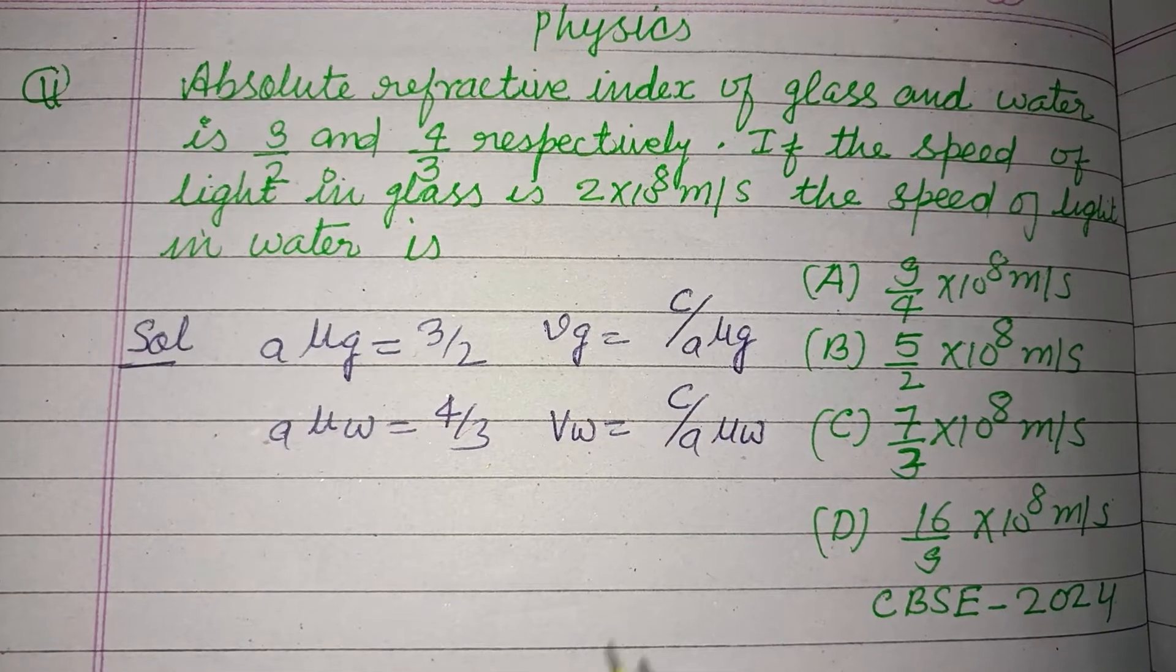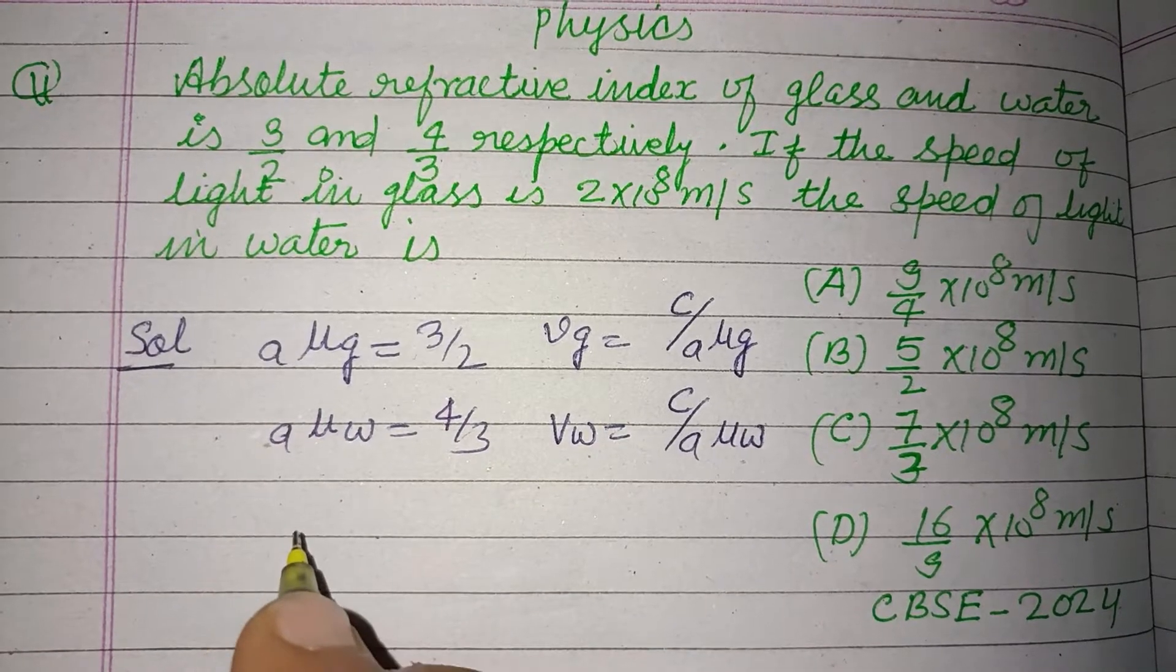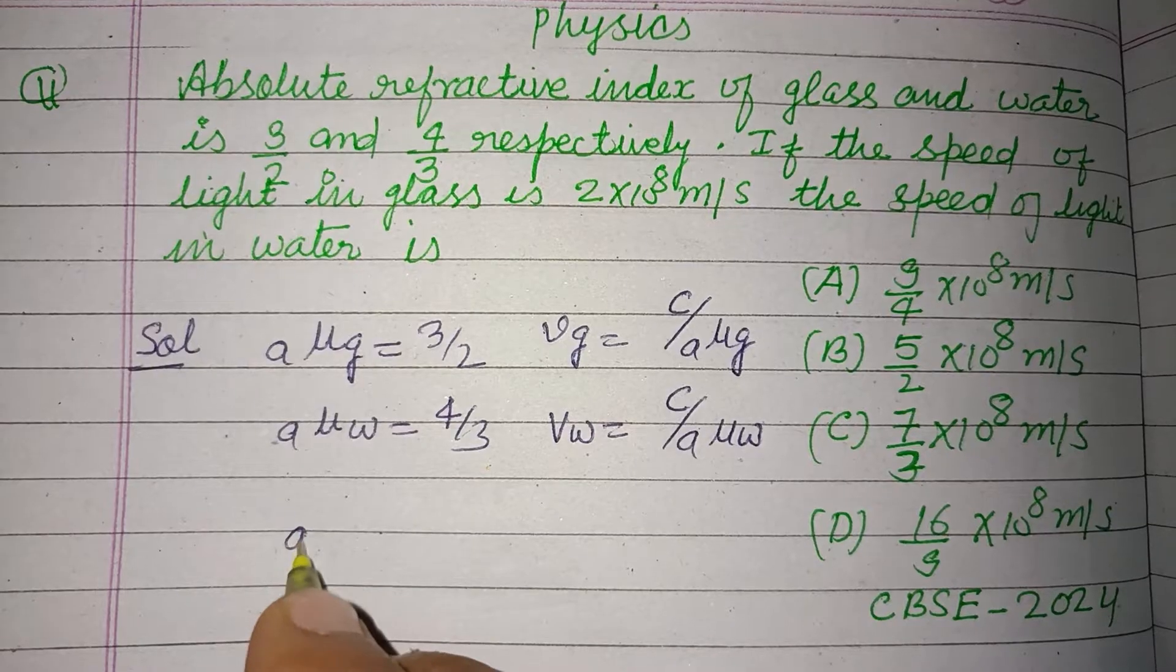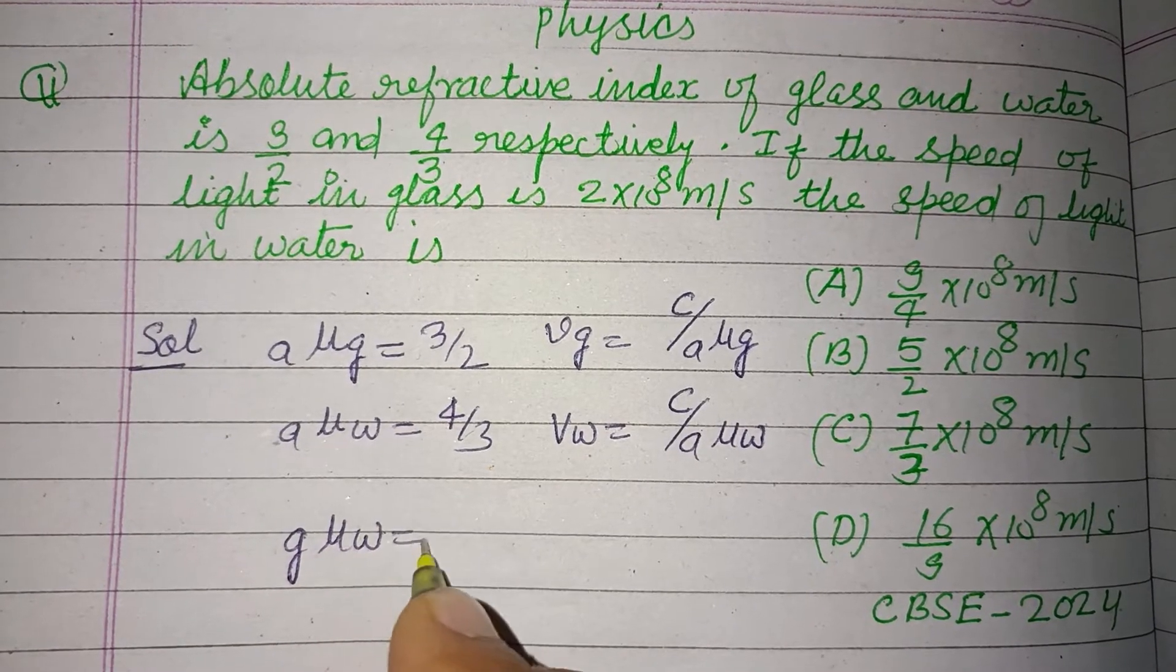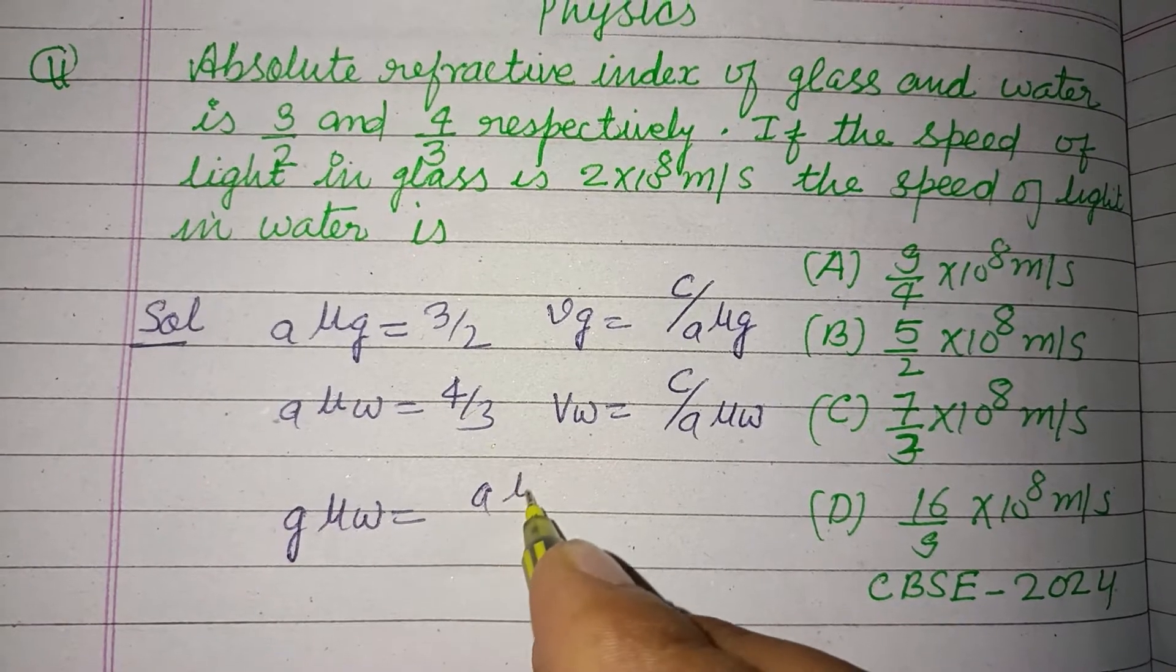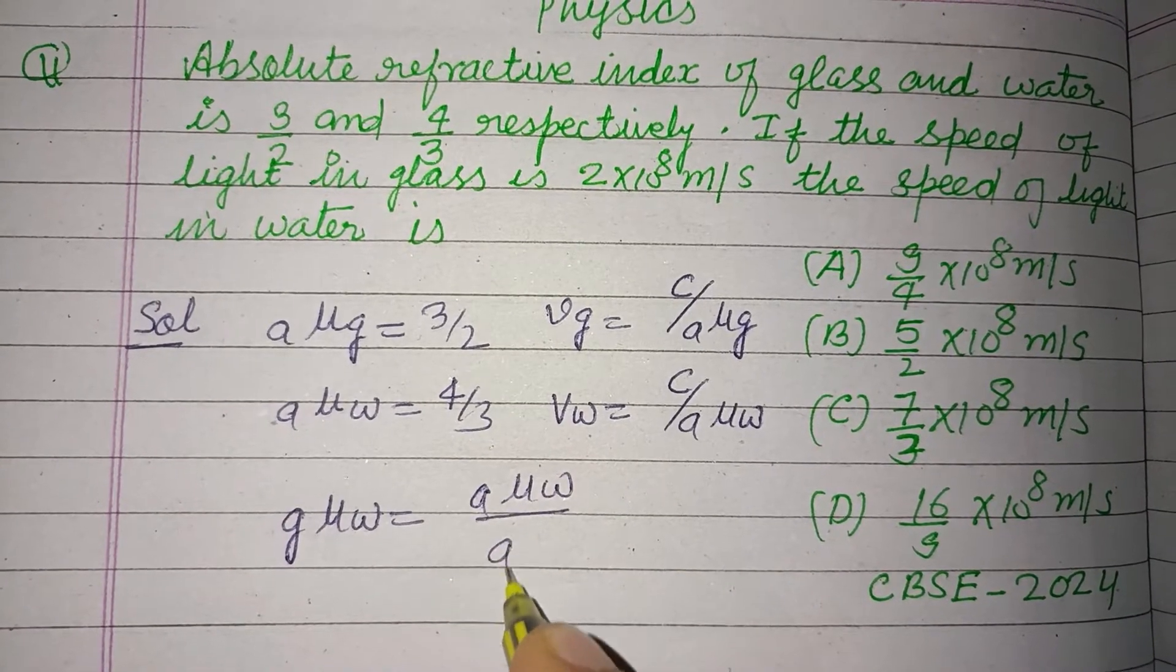So here we have g mu w equal to a mu w over a mu g.